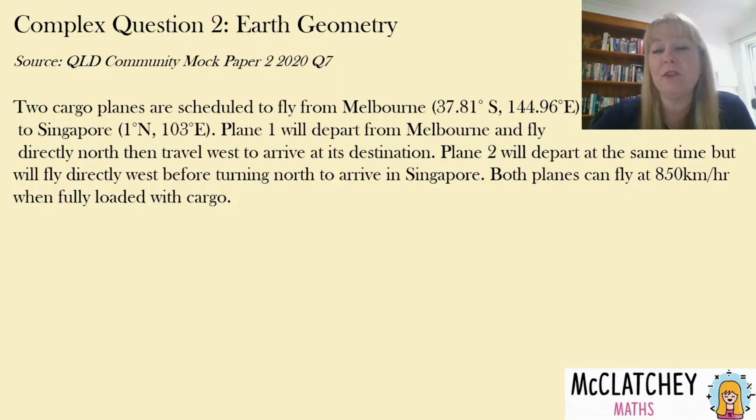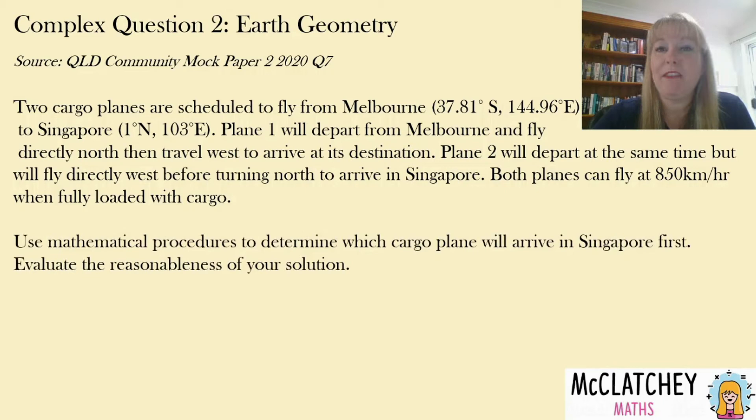Two cargo planes are scheduled to fly from Melbourne to Singapore. Plane one will depart from Melbourne and fly directly north then travel west to arrive at its destination. Plane two will depart at the same time but will fly directly west before turning north to arrive in Singapore. Both planes can fly at 850 kilometers an hour when fully loaded with cargo. We need to use mathematical procedures to determine which cargo plane will arrive in Singapore first and evaluate the reasonableness of our solution.